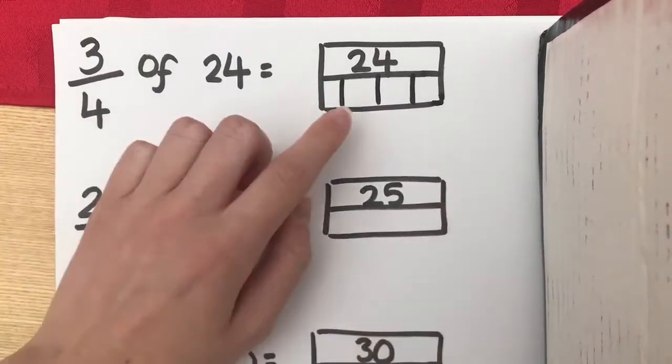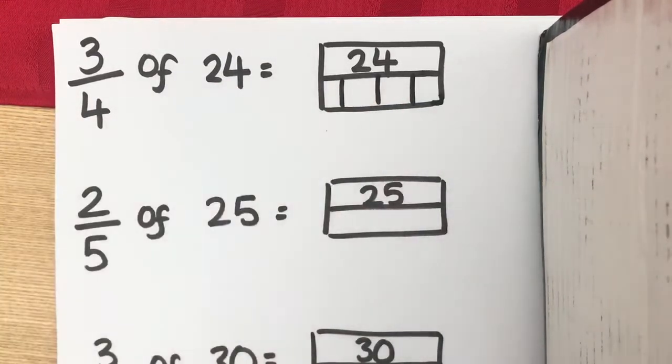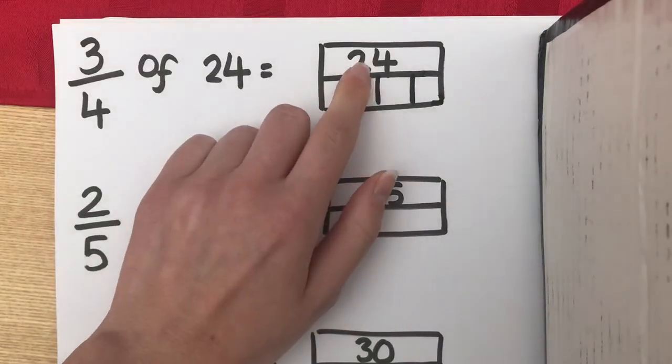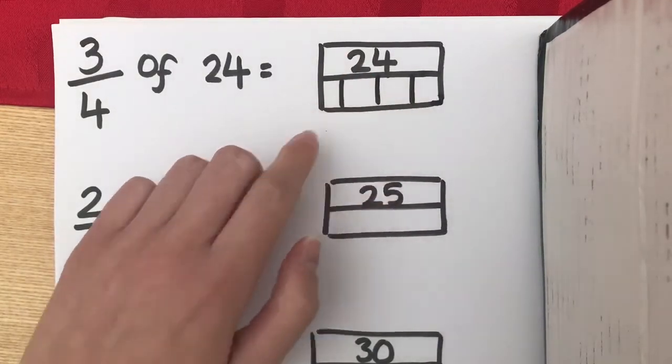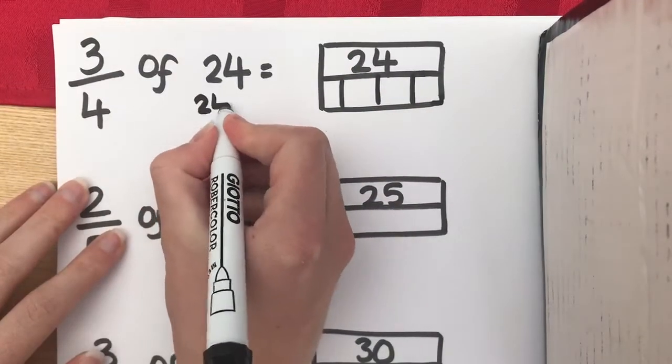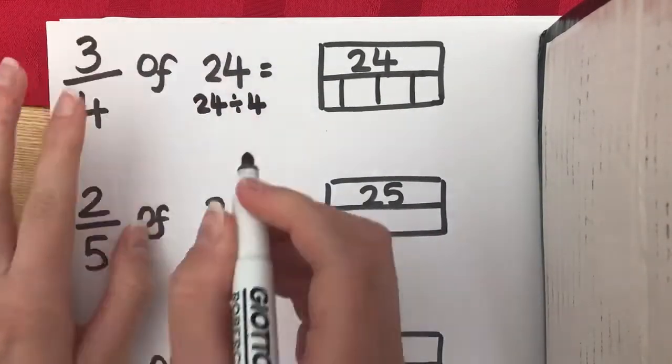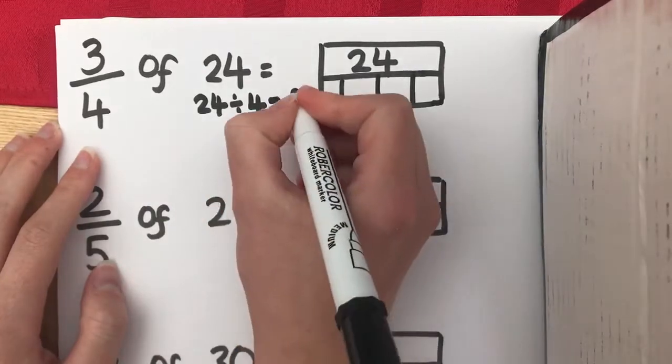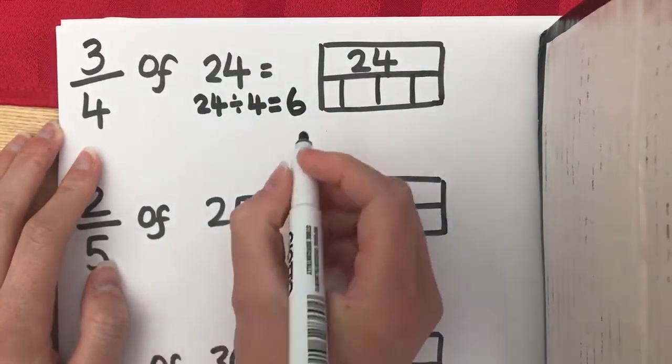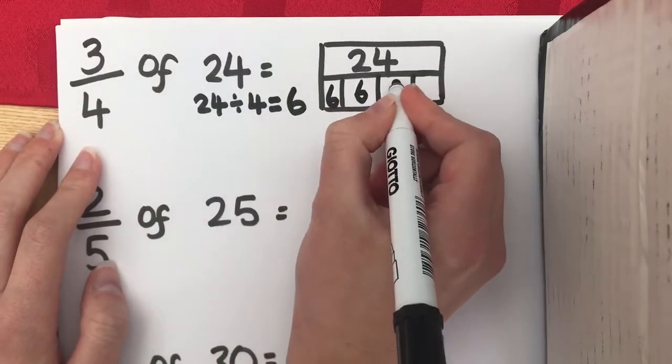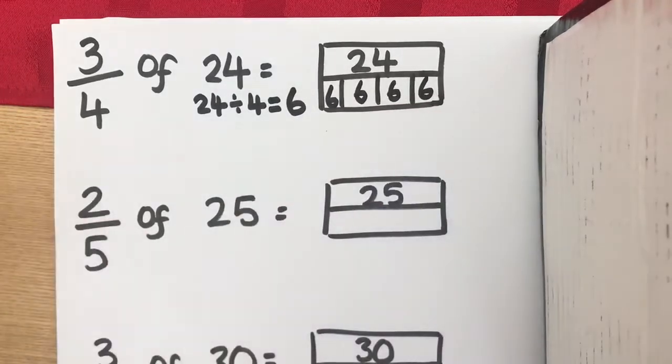Now, in order to work out what each one of these quarters is worth, we have 24 and we've split it into 4 pieces. So, we've essentially done 24 divided by or split into 4 pieces. Using your times tables, you should know that that is 6. So, each one of these quarters is worth 6.